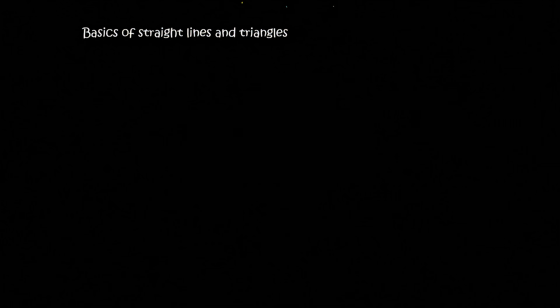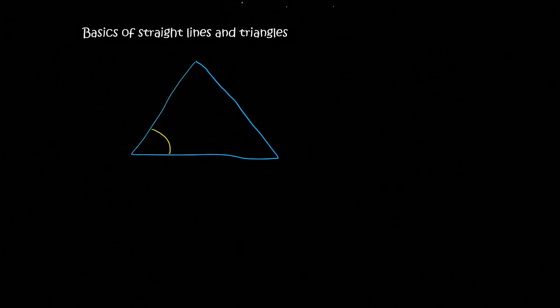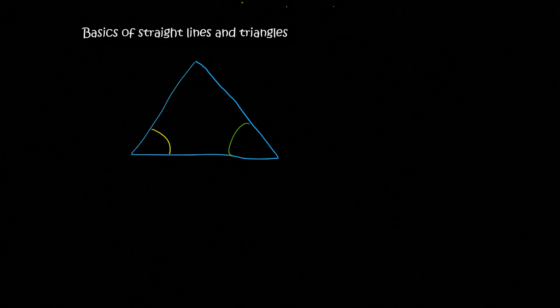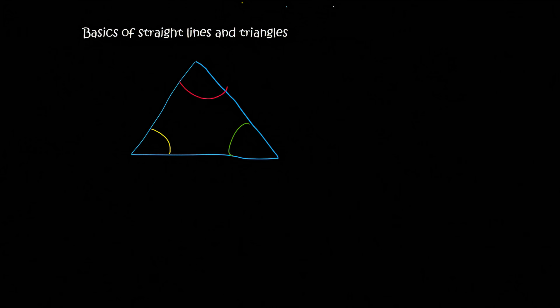Let's move on to triangles. The first thing you need to know about a triangle is that all three angles — this one, this one, and this one — will always add up to 180 degrees. Always.